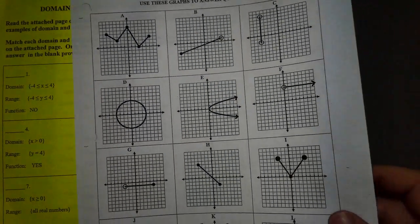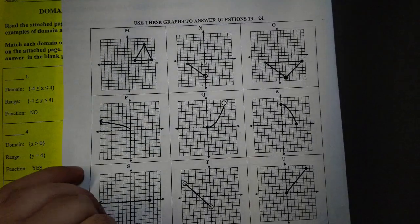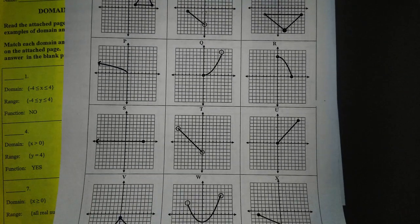If you look on these graphs, they're labeled A, B, C, D all the way up to L and then on the other side they're labeled M all the way to X.